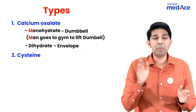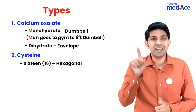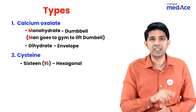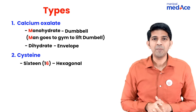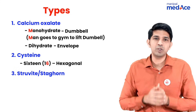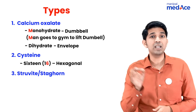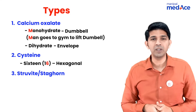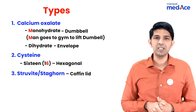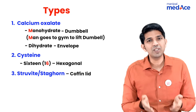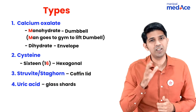For cystine stones, remember the word '16' because they sound similar and it has 6 in it — so cystine stones will have hexagonal-shaped crystals. For staghorn or struvite stones, imagine if a stag attacks you, there is a high chance you'll end up in the coffin — so staghorn calculus will have coffin-lid crystals. The last one is uric acid stones, which are associated with glass shard crystals.